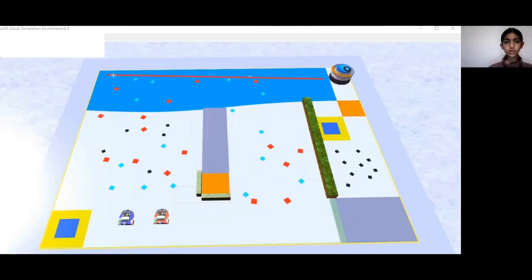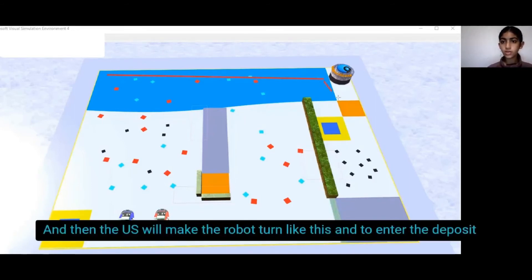And because the robot doesn't go in a straight way, it's slightly in line. And then the ultrasonic will make the robot turn like this and it will enter the deposit.